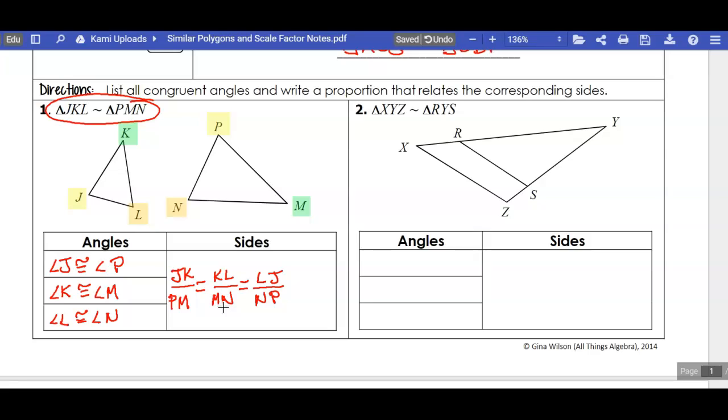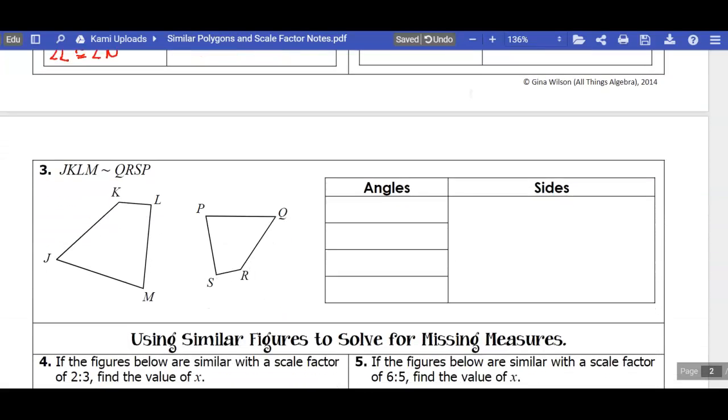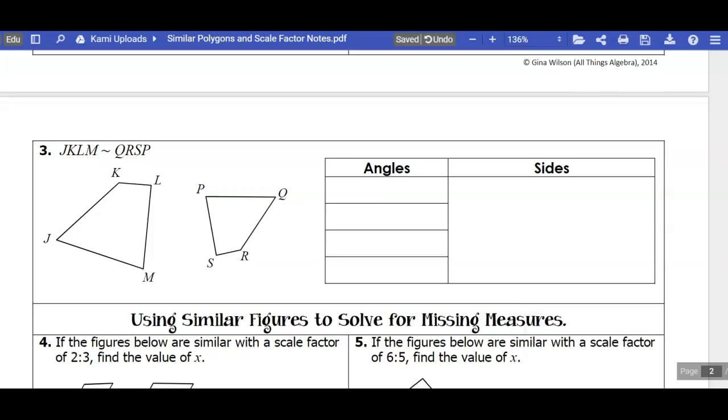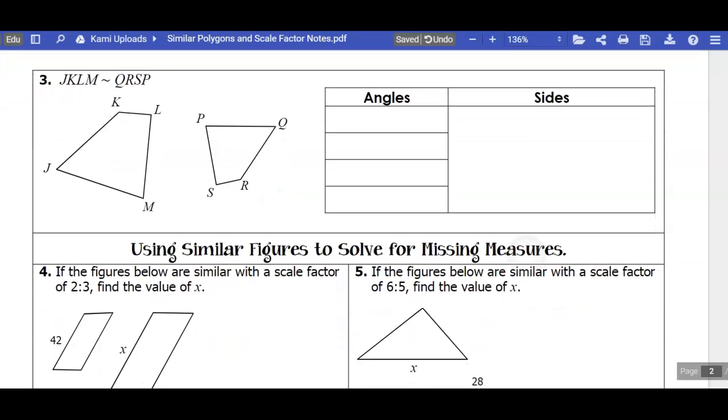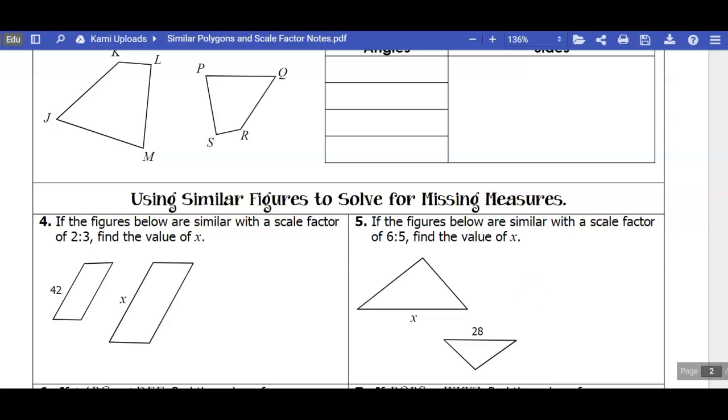If you want to go ahead and give number 2 a try, feel free to do that. Otherwise, you can finish the notes and go back to that. And then you'll also do number 3. Now, for number 3, you have a quadrilateral with four sides, so you'll just have one more pair of congruent angles and one more pair of congruent sides.